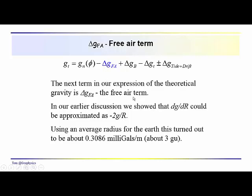It's referred to as the free air term. Remember we went through this before, dG/dR turns out to be minus 2G over R. Using an average radius for the earth, we came up with a value of 0.3086 milligals. Using the gravity units here, this was about 3 gravity units.